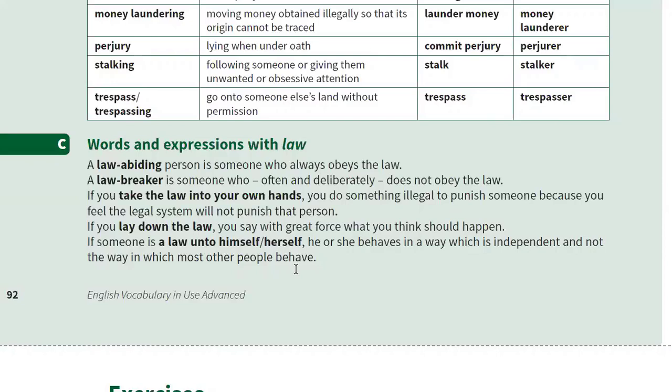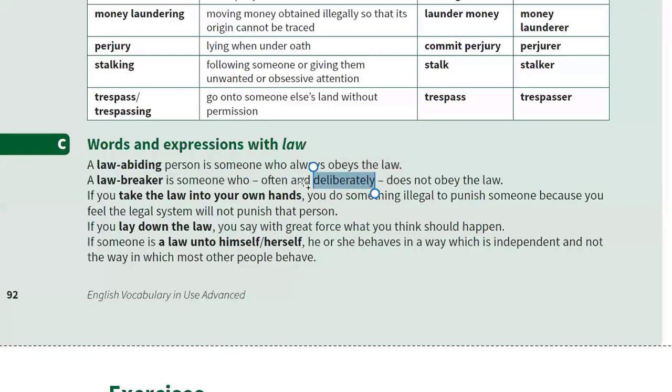Now, words and expressions with 'law.' A 'law-abiding person' is someone who always obeys the law and never breaks it. A 'law breaker' is someone who often and deliberately — meaning knowingly — does not obey the law.